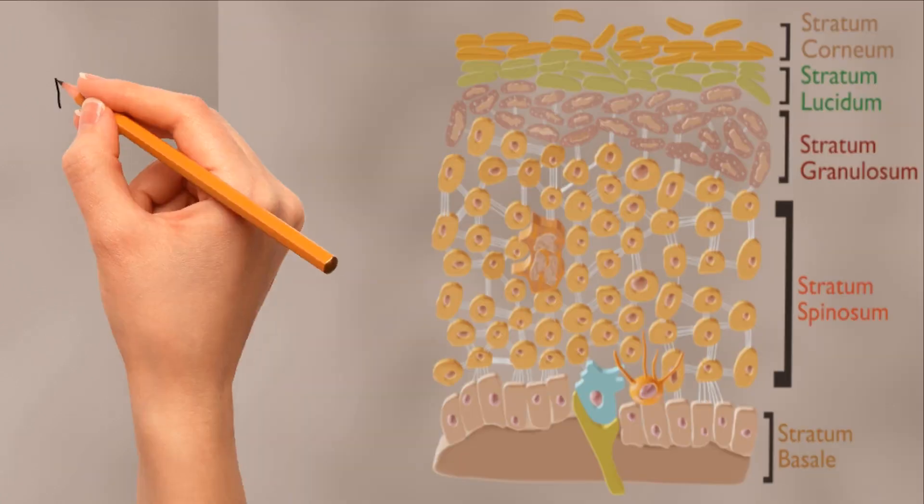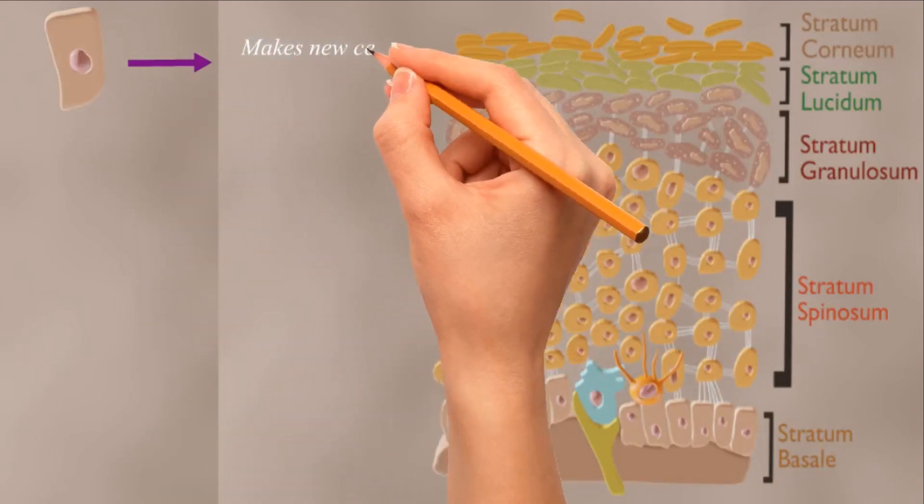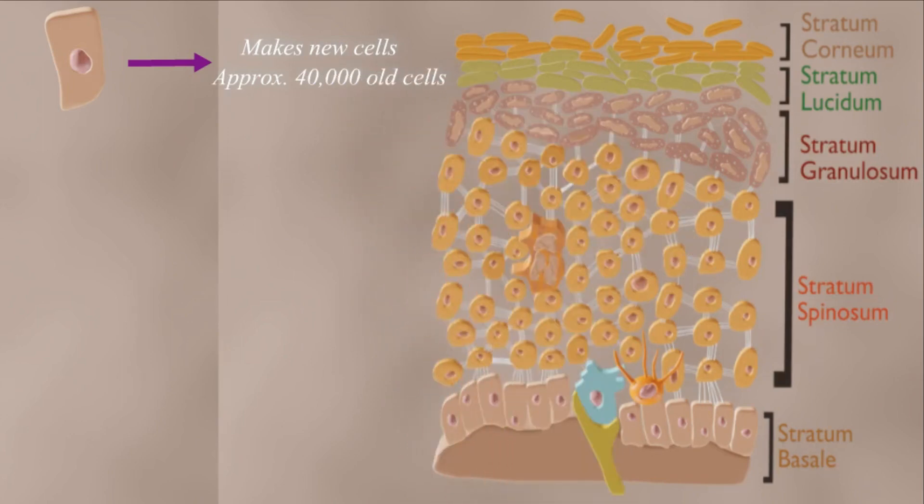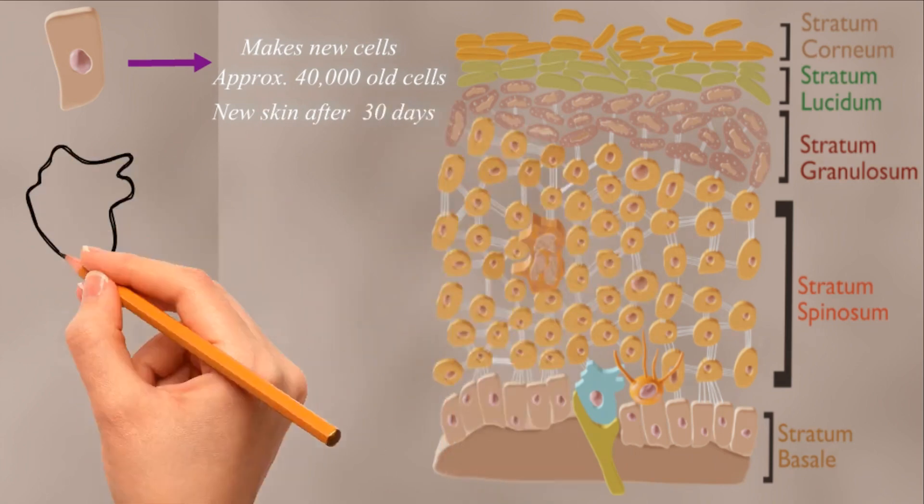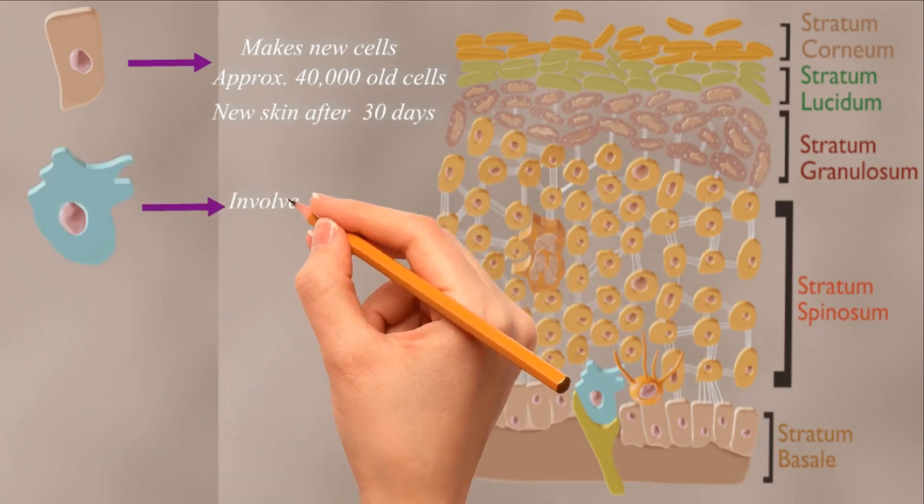Function of epidermis: Basal cells continually make new skin cells. These new cells replace the approximately 40,000 old skin cells that your body sheds every day. You have new skin every 30 days. Merkel cells are very close to the nerve endings that receive the sensation of touch.